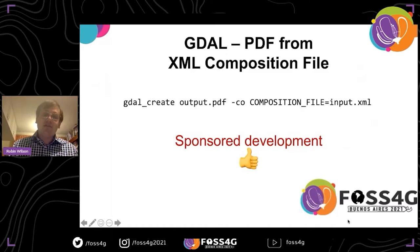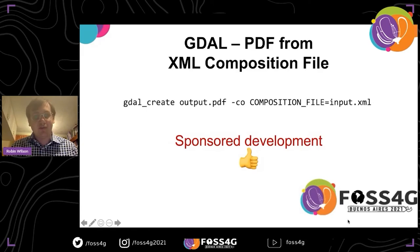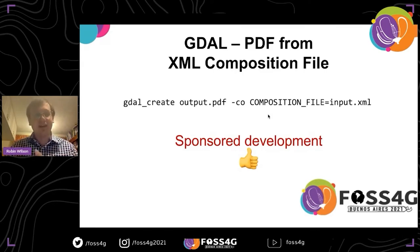Sometimes you want to create Geo PDFs programmatically from vector data without going through QGIS. You can create them through GDAL using an XML composition file. You write an XML file, then run the GDAL create command, giving it the output filename and a creation option pointing to your composition XML file. When I started this work about a year ago, my boss sponsored a GDAL core developer to add this GDAL create command, which also supports PDFs from XML composition files without requiring custom code.